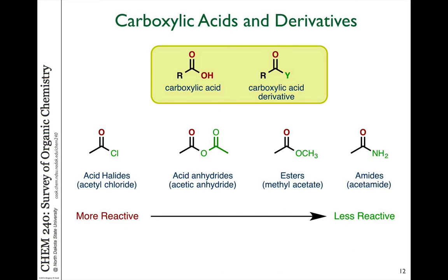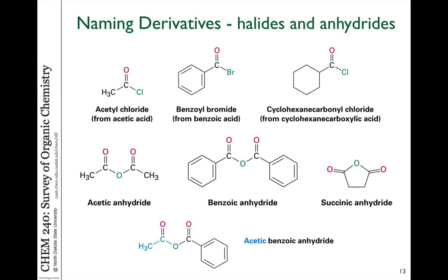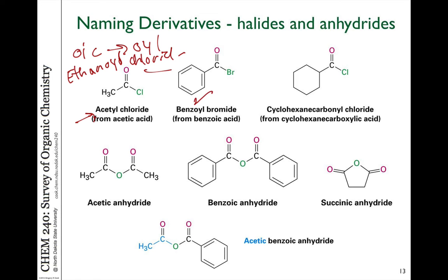We also have naming for carboxylic acid derivatives, focusing on the four types: acid halides, anhydrides, esters, and amides. Acid halides are named after their parent acid — in strict IUPAC naming you drop the OIC group and add OYL to form the acyl group attached to the halide. So acetic acid becomes acetyl chloride (commonly) or ethanoyl chloride (IUPAC). Benzoic acid becomes benzoyl bromide — drop the OIC and add OYL. Cyclohexane carboxylic acid becomes cyclohexane carbonyl chloride.